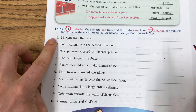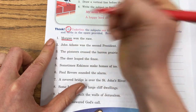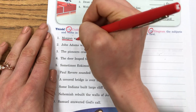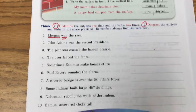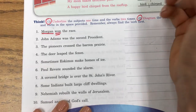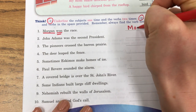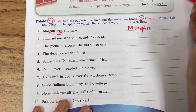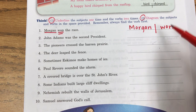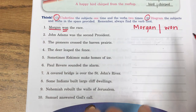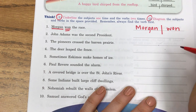Number one: 'Morgan won the race.' We're going to find the subject — who? Morgan. And what did she do? She won. Morgan won. Now, here's that long line I was talking about. We are going to write our subject: Morgan. Then there's my line. What did she do? She won. As you continue to work on these, there's not a ton of space — I don't want you to draw this whole line straight down; you can just draw it separately.